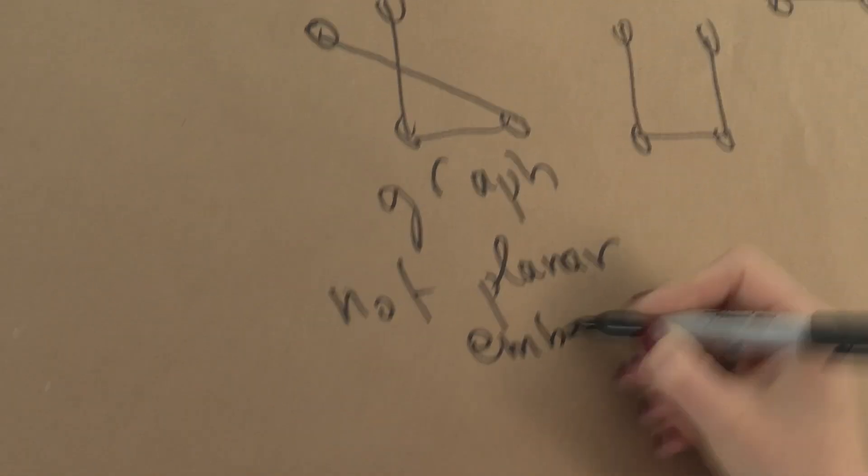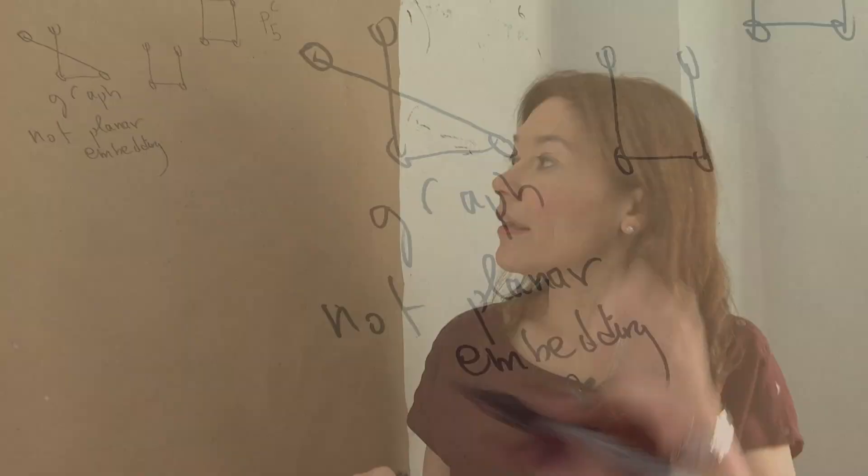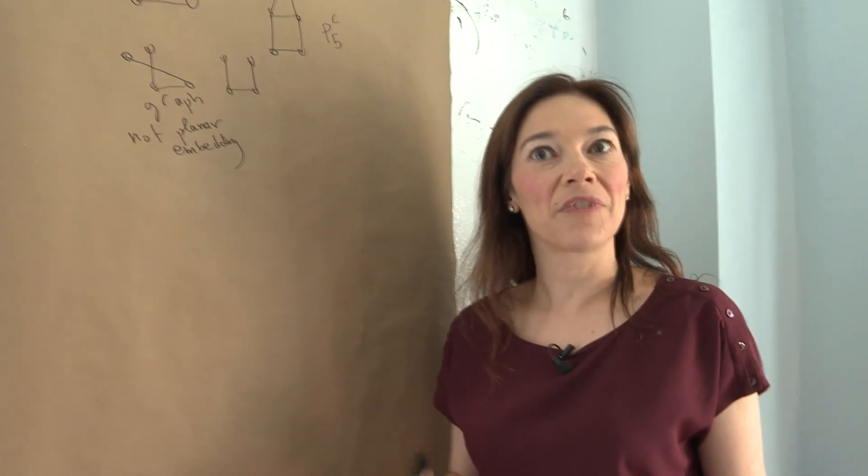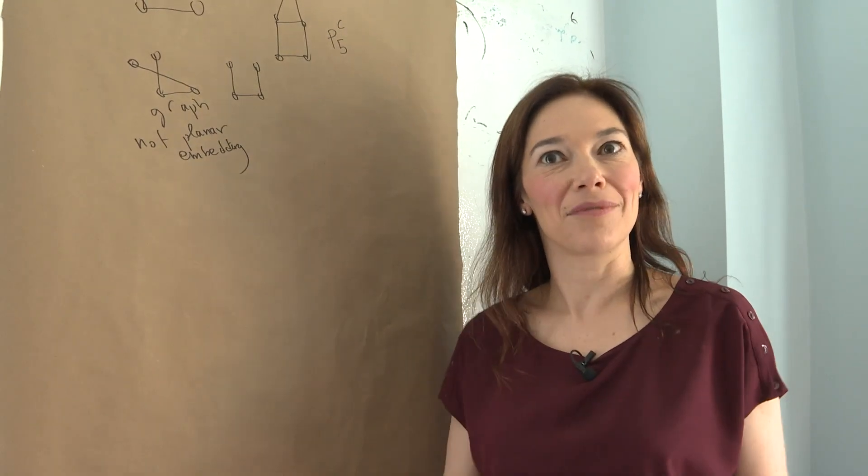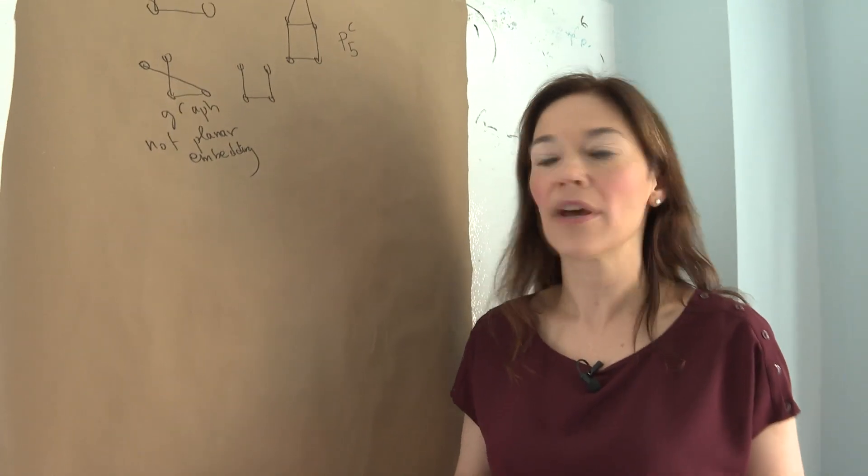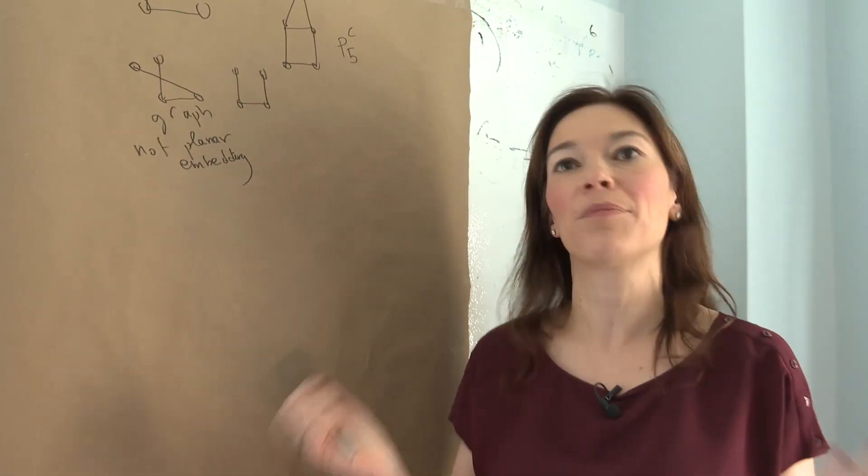Is a planar embedding somehow better? It's probably possibly good for some applications, like if you want a VLSI component or something, which I don't know anything about. But it's just another property.